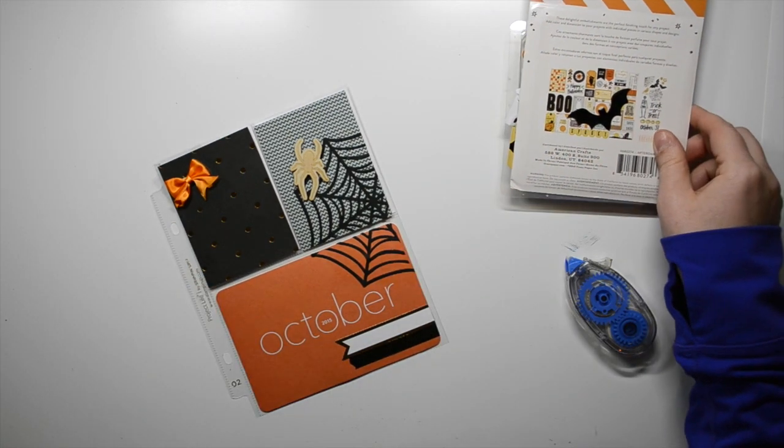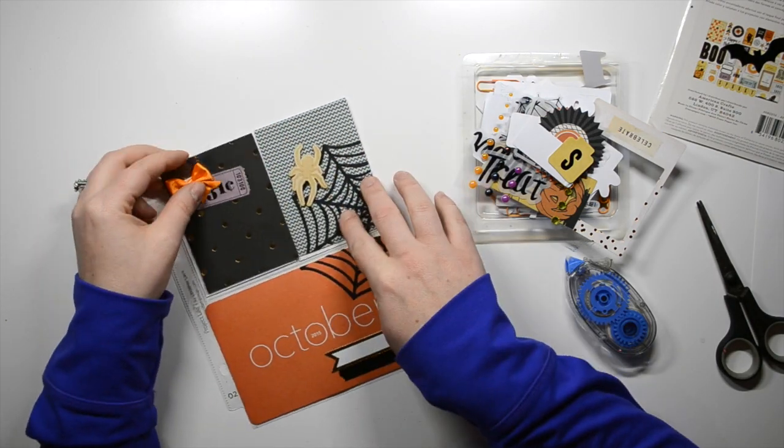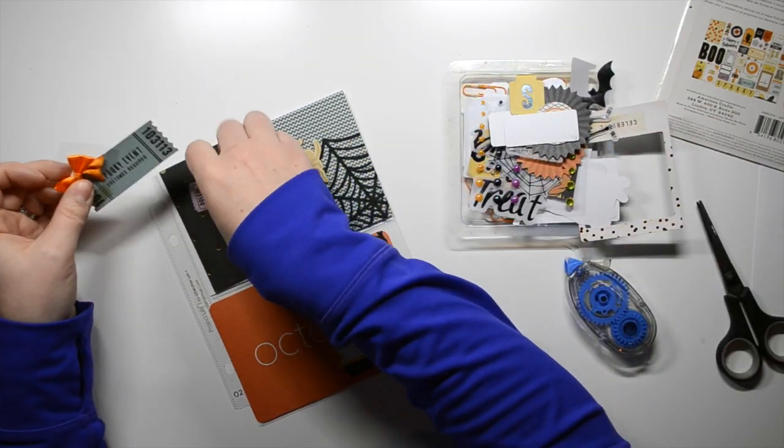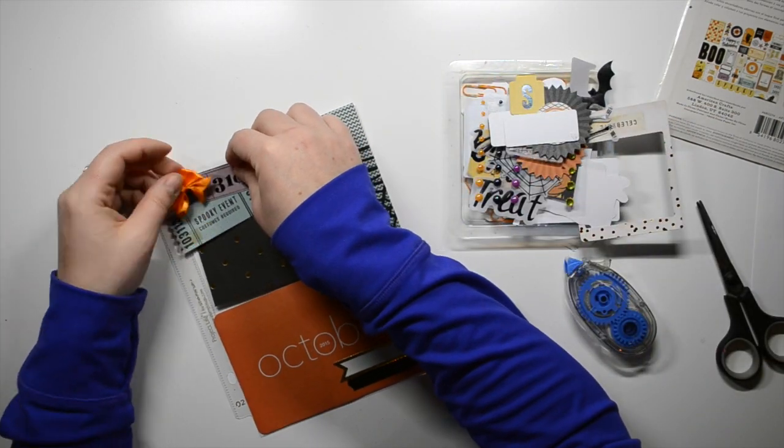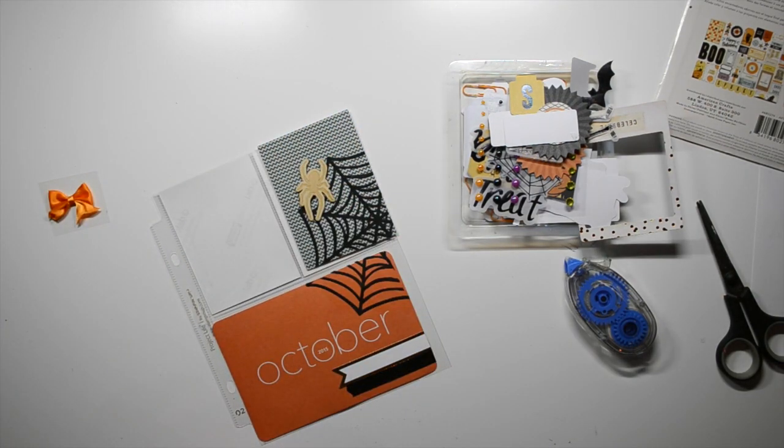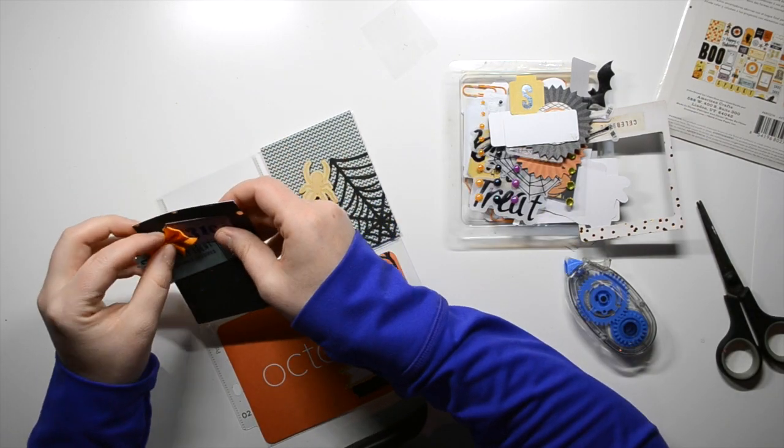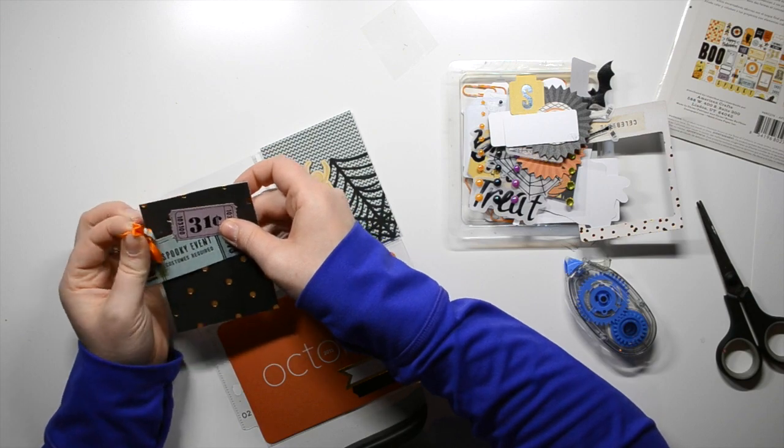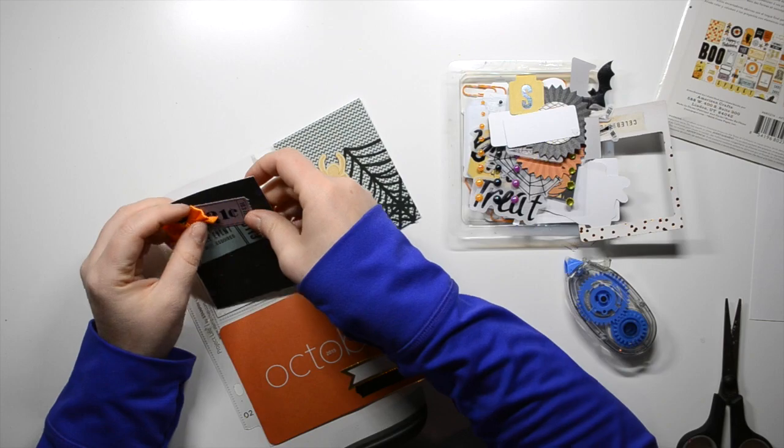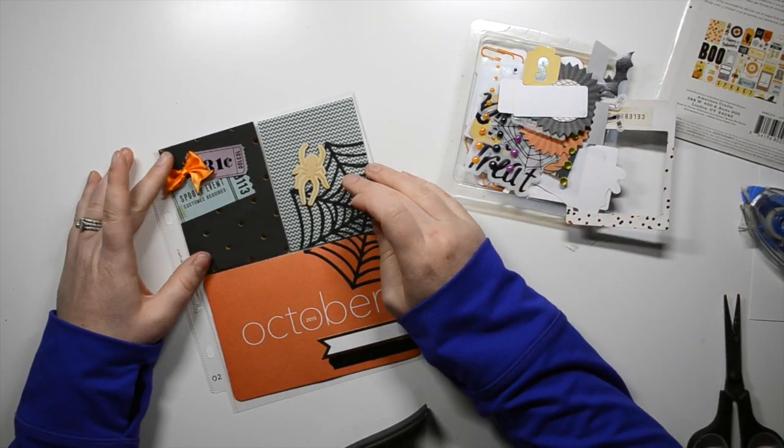And the bow that you see in the top left-hand corner is also from Recollections, just got it in like a 12-pack or a 9-pack at Michaels. Layering in some of the ephemera now, just these ticket pieces. I liked the purple ticket. There's not a ton of purple in the collection, so I thought I would use it on the first page. I like the ticket because it has 31, and there's 31 days in October. And then I just use this other blue kind of tickety thing to bring in the blue from the other card.